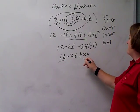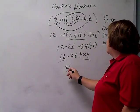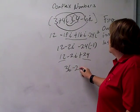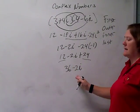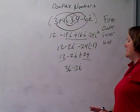Now I've got like terms. 12 and 24 is 36. Bring down the minus 2i. I can't combine that because this one's got an i and that one doesn't. So I'm done simplifying.